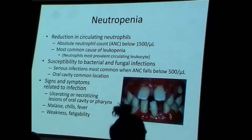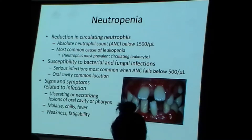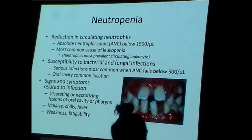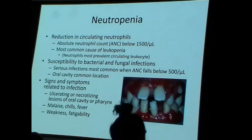Neutropenia is a deficiency of neutrophils in circulation. The threshold is an absolute neutrophil count below 1,500. Neutrophils are the most prevalent cells in the blood. Neutropenia usually results in susceptibility to bacterial and fungal infection — this makes sense when we think about neutrophils as first responders to infection. Common locations for infection include the oral cavity, where hundreds of commensal bacteria reside, as well as the skin, upper respiratory tract, and lungs.